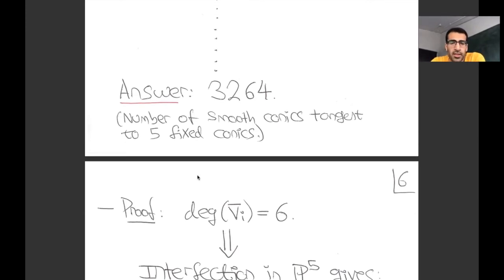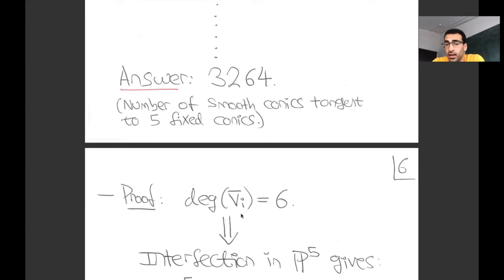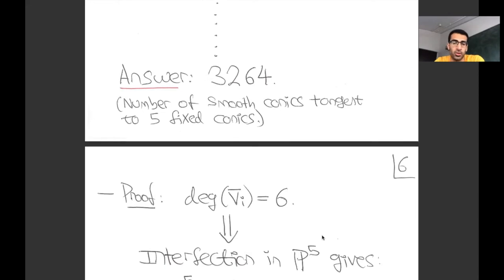The proof goes as follows. Previously we were working inside U of smooth conics, but let me enlarge and work inside P5 of all conics, because P5 is compact and its intersection theory is well-behaved. It turns out that if you take the closure of V_i inside P5, it's still a hypersurface, and it actually has degree six. The P5 has homogeneous coordinates corresponding to the coefficients of the equation defining your conic. Plugging in what being tangent to C_i means gives you a degree six equation involving those coefficients.